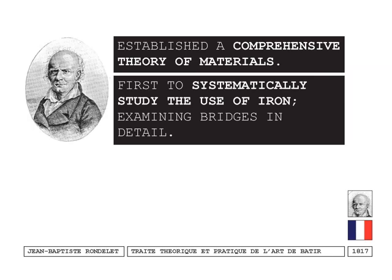What Rondelet did was establish a comprehensive theory of materials. In 1817, nobody had done this quite the way he did. He was the first to systematically study the use of iron, and he did this by examining bridges in detail. The idea that works of civil engineering can be brought into the realm of architecture was remarkable. If you understand architecture as a fine art, it would be very difficult to relate it to civil structures or brute works of engineering. So to bring in bridges and new materials into the realm of architecture was already quite a disruption to the received canon of architecture from the classics.